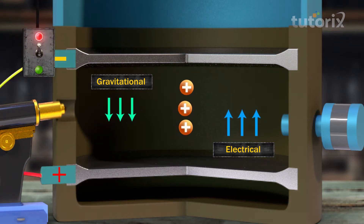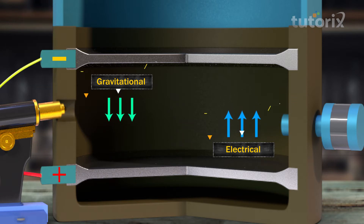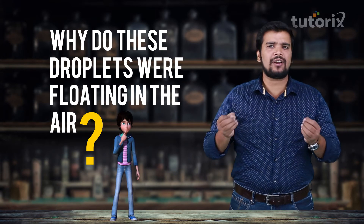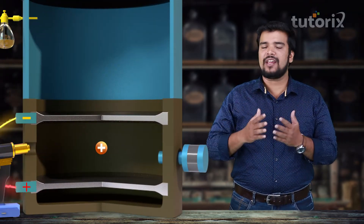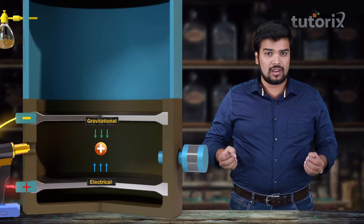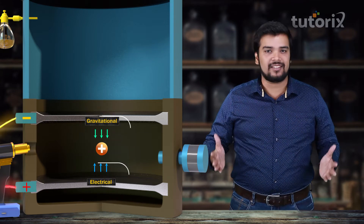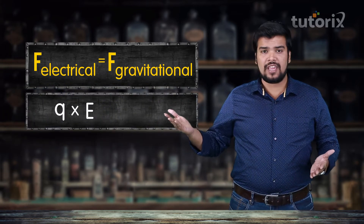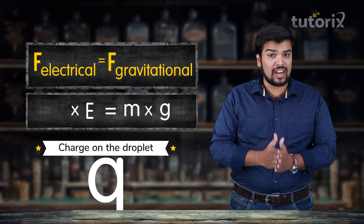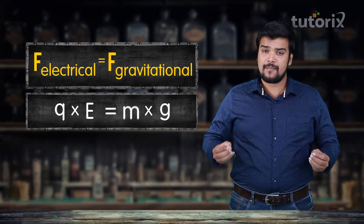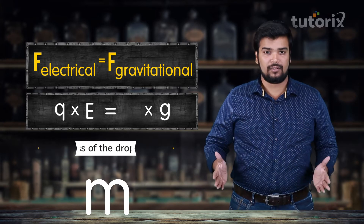When the voltage was turned off, the droplets simply fell down due to gravity, and based on the rate of fall Millikan calculated the mass of the droplet. When the droplets are floating, the electrical force pulling them upward and the gravitational force pulling them downward are exactly equal. This can be expressed as F_electrical = F_gravitational, or rewritten as Q × E = M × G, where Q is the charge of the droplet, E is the strength of the electrical field, G is the acceleration due to gravity, and M is the mass of the droplet found from the rate of fall.